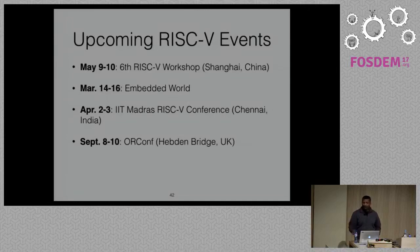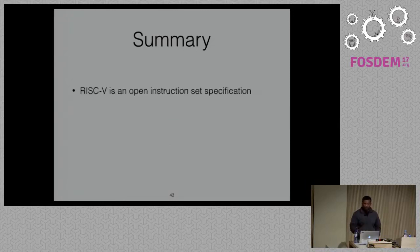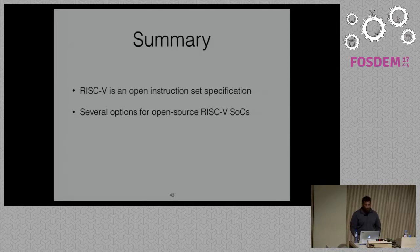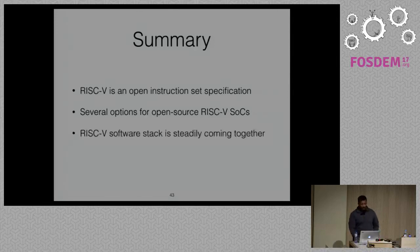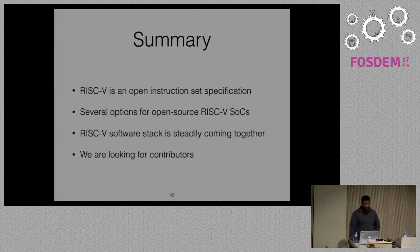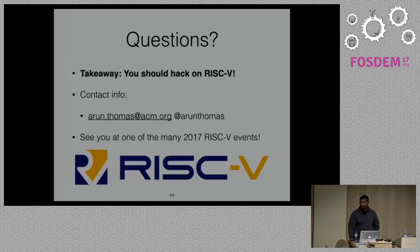In summary, RISC-V is an open instruction set specification — you can grab it, build proprietary or open source cores, and you don't have to worry about getting sued. Because it's an open standard, there are a lot of open source cores available, including the Rocket Chip and LowRISC, among many others. The RISC-V software stack is steadily coming together — things are getting upstreamed, distros are happening, and we'd love your help. The takeaway is: hack on RISC-V, and I hope to see you at one of the many 2017 RISC-V events. Thank you.